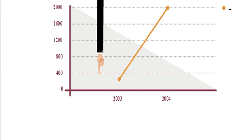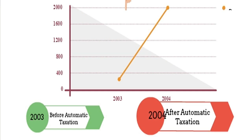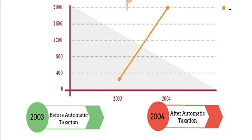You can see the revenue chart of Afghanistan, which states the revenue of 2003 and 2004. In 2003 is the revenue before the implementation of automatic acquisition. In 2004 is the revenue after automatic acquisition. In 2003, the revenue was 200 million and increased to 2 billion by 2004. So that's quite a big difference.